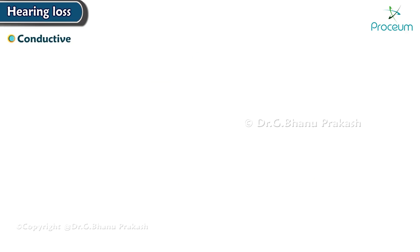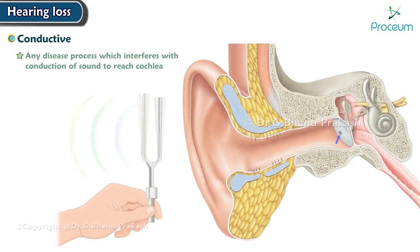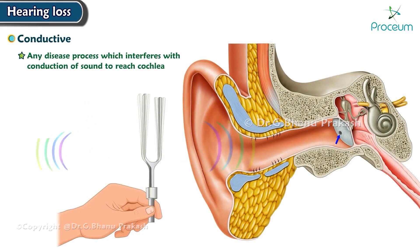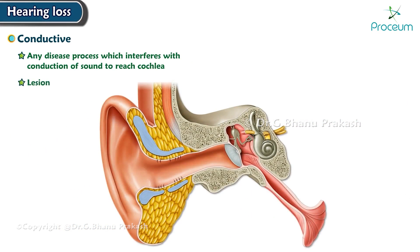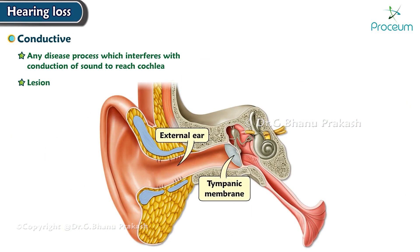Conductive hearing loss occurs when any disease process interferes with the conduction of sound to reach the cochlea. The lesion may lie at any site such as the external ear, tympanic membrane, middle ear, or anywhere up to the stapediovestibular joint.